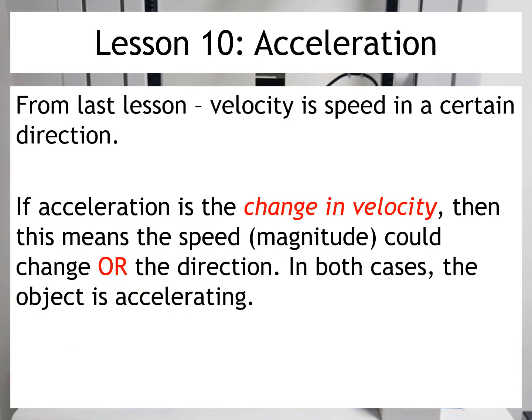So from previous lessons, we've learned that velocity is speed in a certain direction. We have to take into account the speed, or the magnitude of the speed, and also the direction in which it's travelling. So if acceleration is a change in velocity, then it means that either the speed or the magnitude could change, or the direction can change. In both cases, the object would be accelerating.